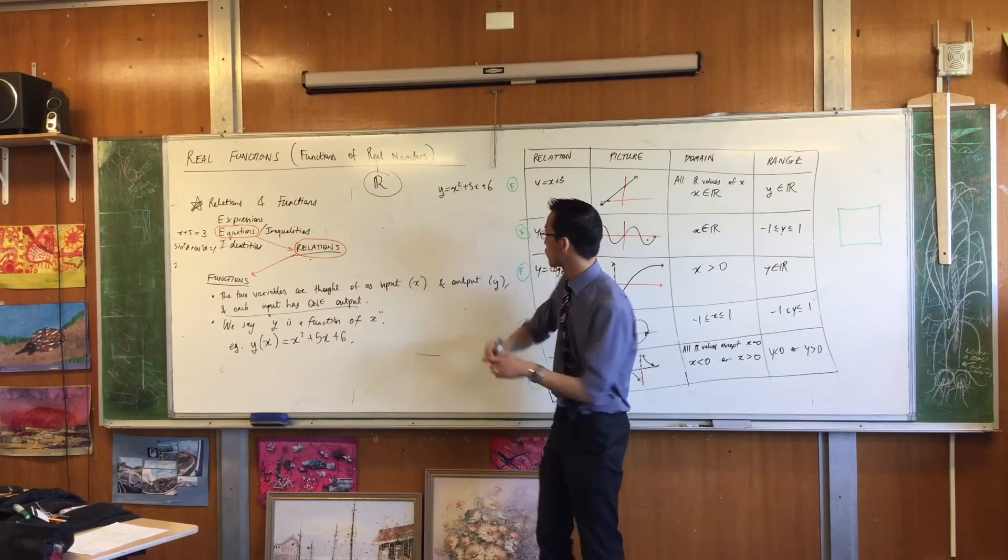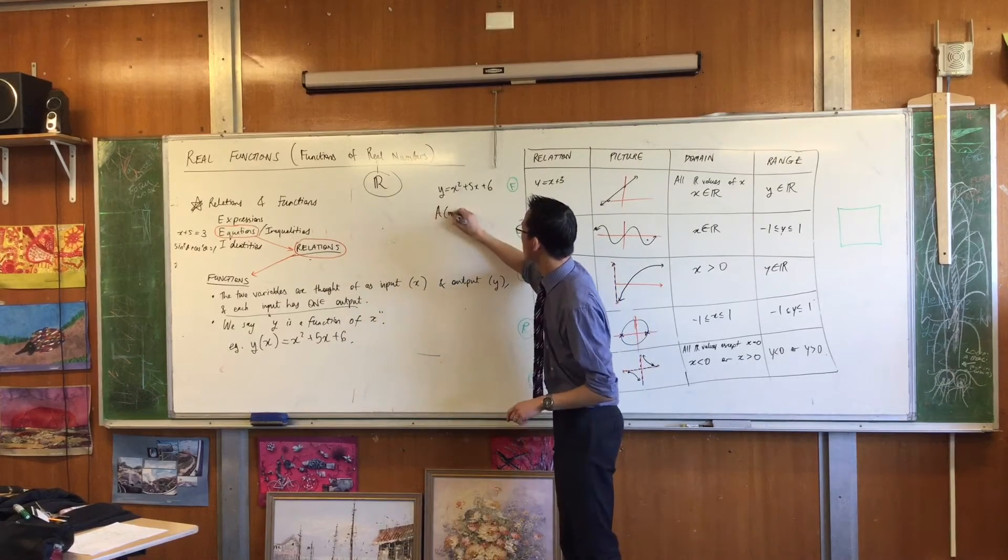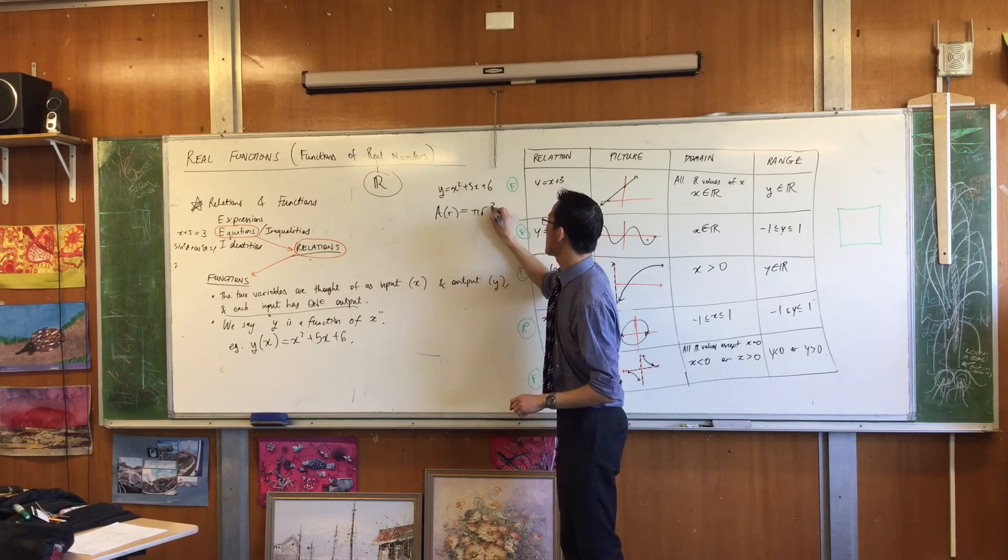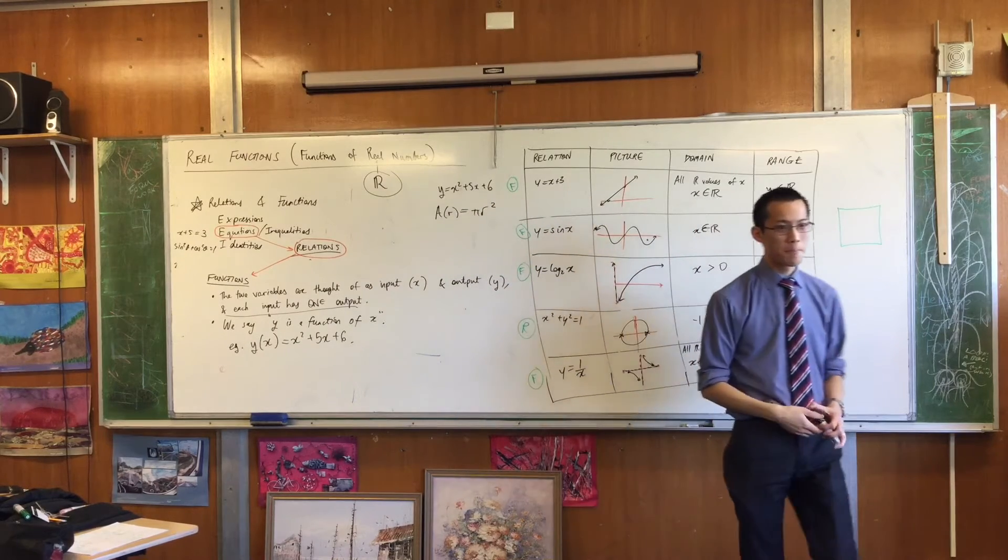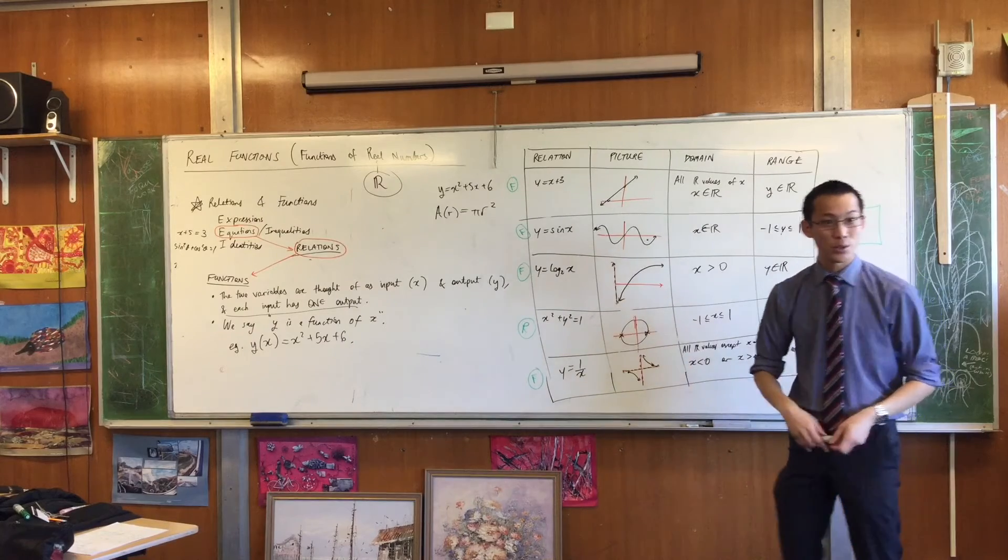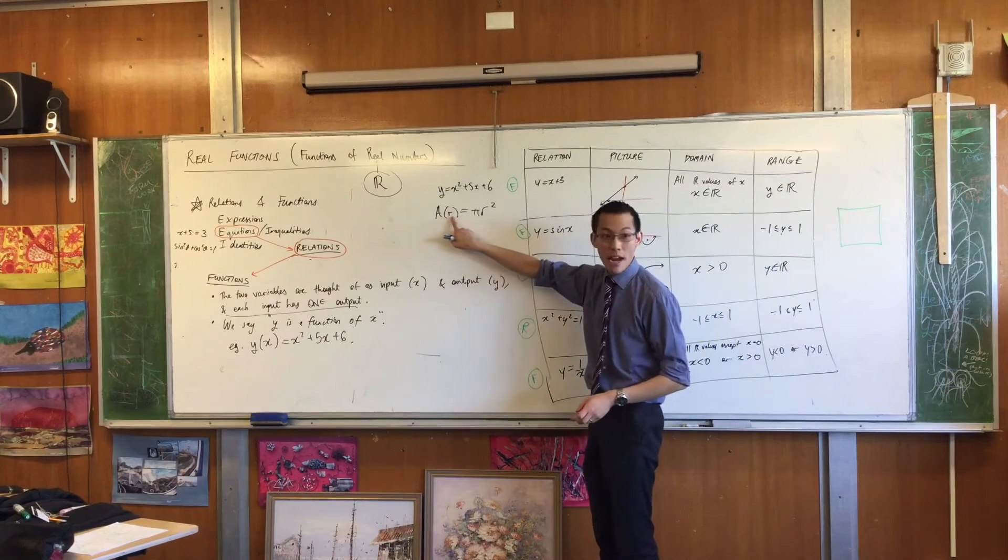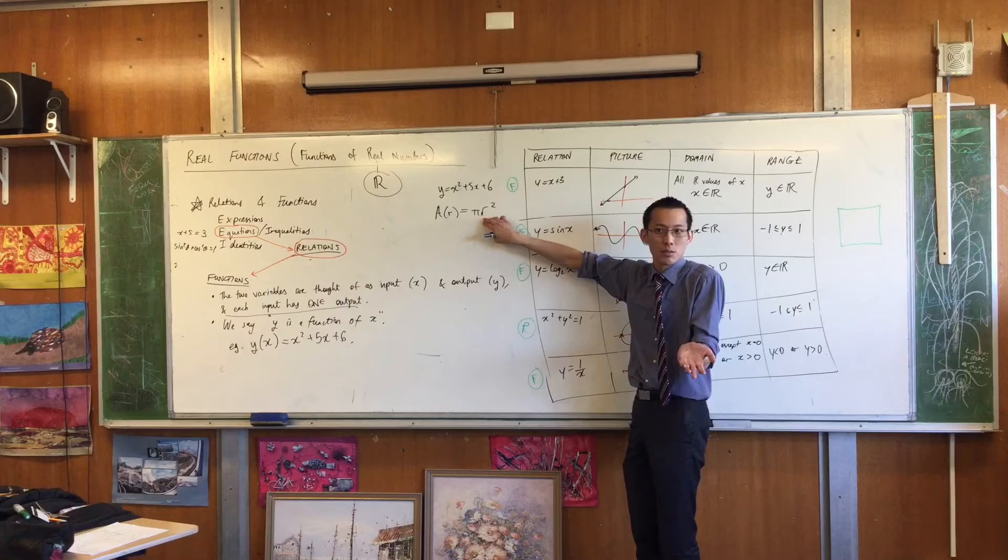I can say this in all kinds of ways. For example, I could say this. What do you think that means? The area of a circle is a function of its radius. And this is what that function is.